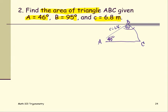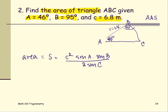This is the case that we have two angles and one side. We're going to use the formula: area S equals the known side, which is C squared, times sine of those two angles, sine A, sine B, all divided by two times sine of angle C.